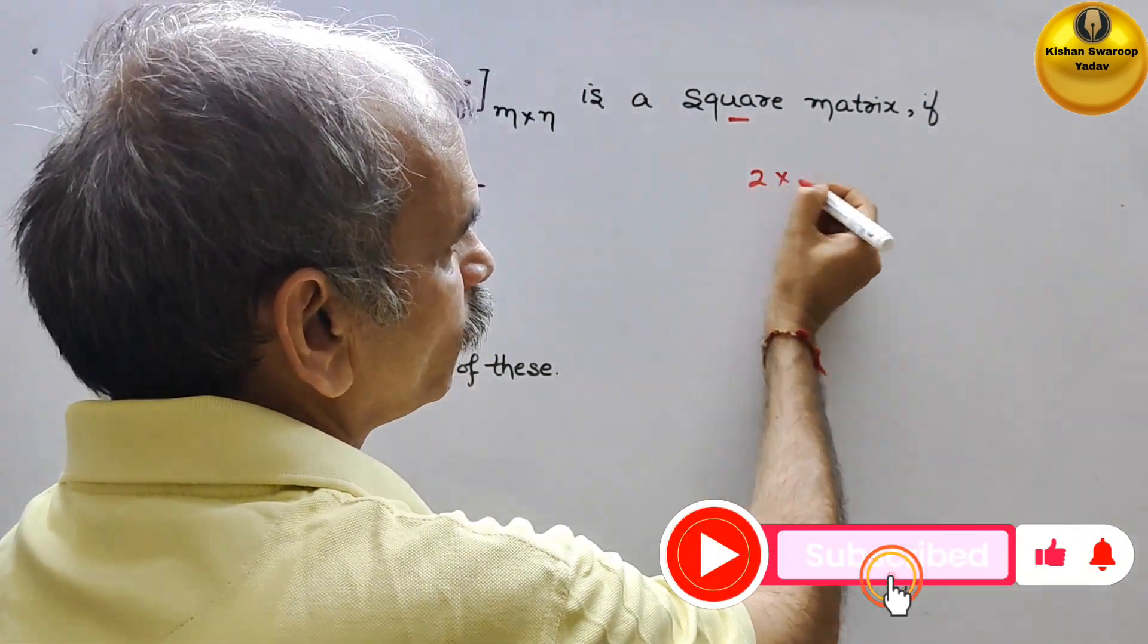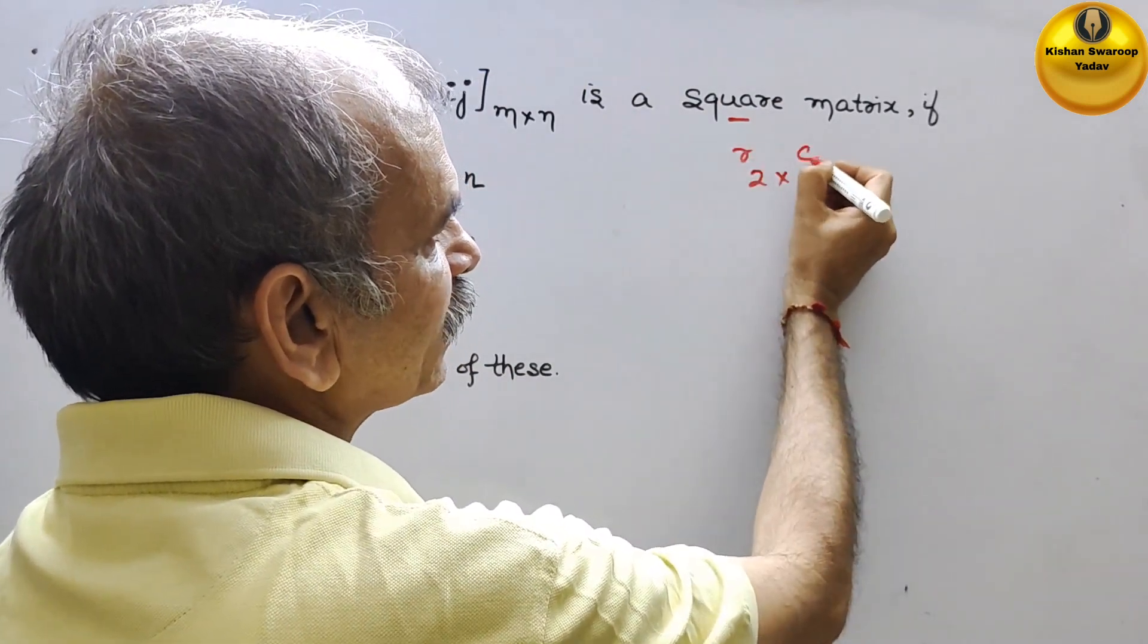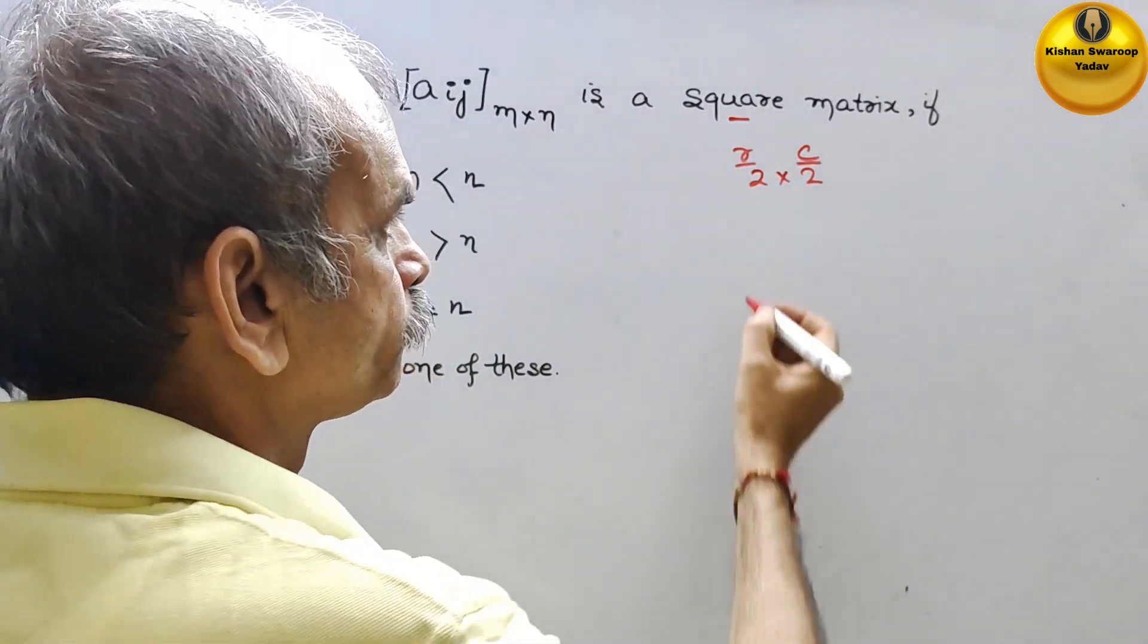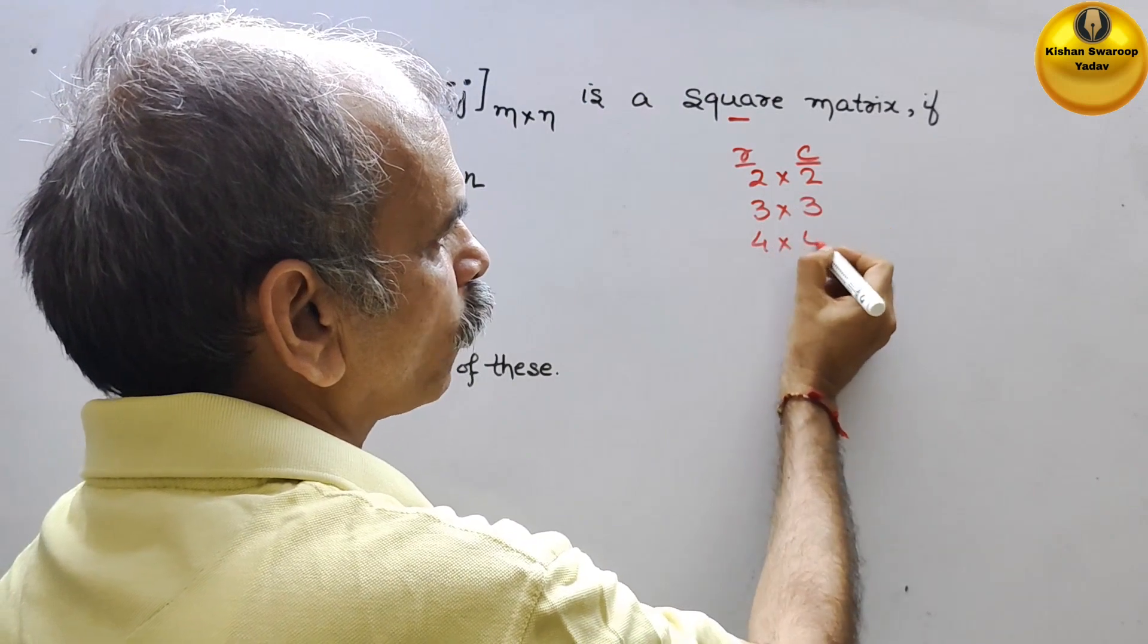2 into 2. That means these are the row and this is the column. 2 rows, 2 columns. 3 rows, 3 columns. 4 rows, 4 columns.